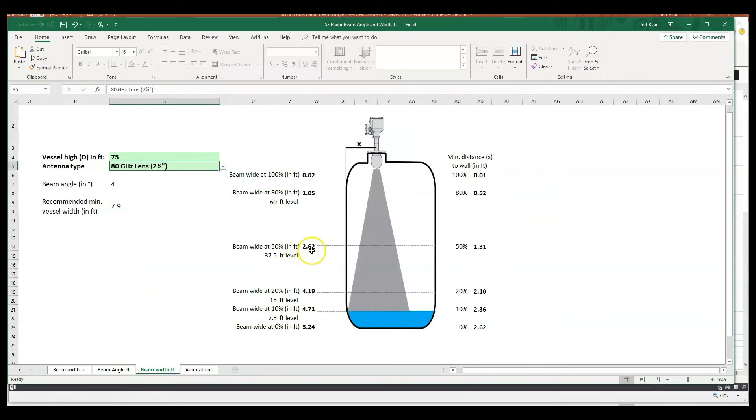At 50% high, it's going to be 2.62 feet. At 80% high, it's going to be just a little over a foot. So you can actually use these radar beam angle calculators to figure out how big the beam is going to be - is it going to intersect a thermal well, a baffle, a heating coil, some other obstacle or internal obstacle that may be in the tank? And you can envision how big the beam is going to be and where it's going to go.